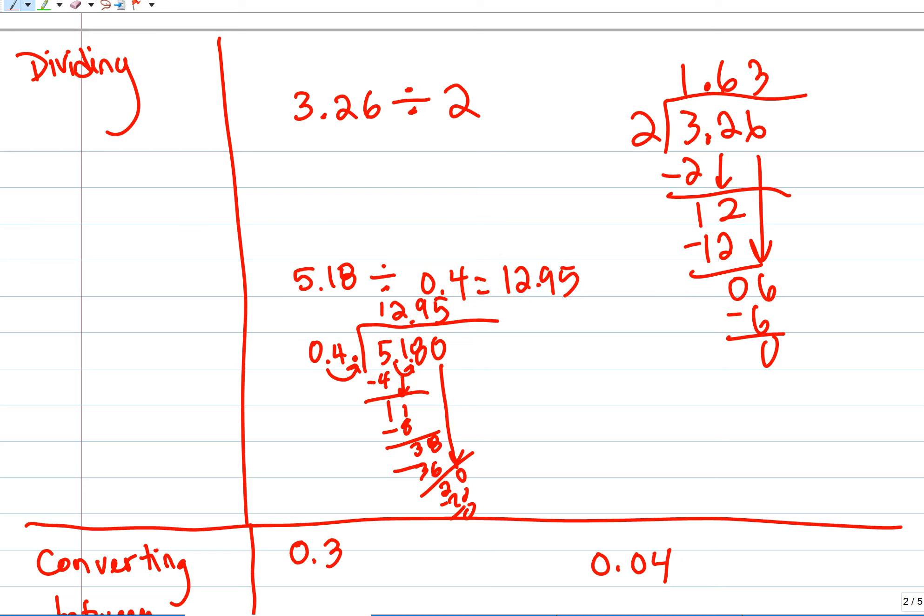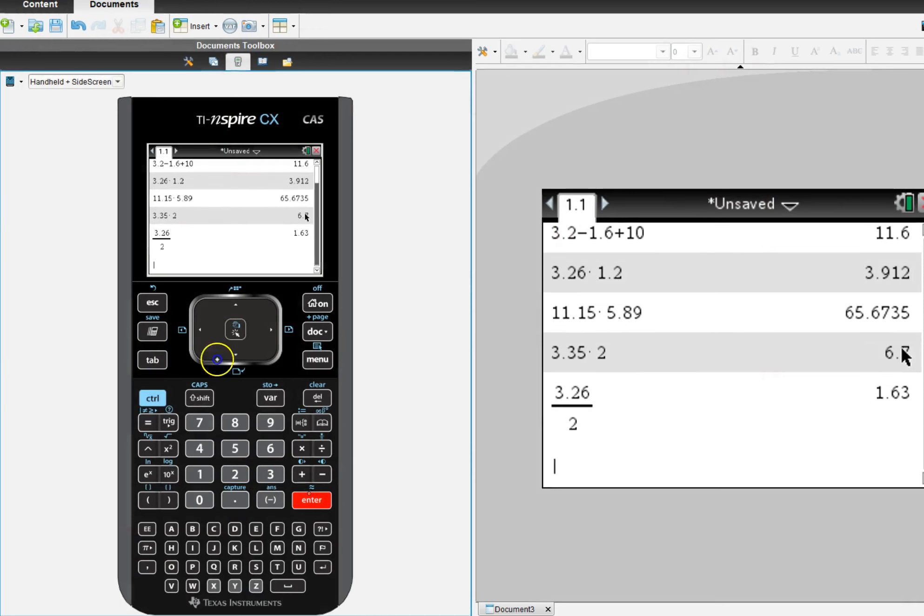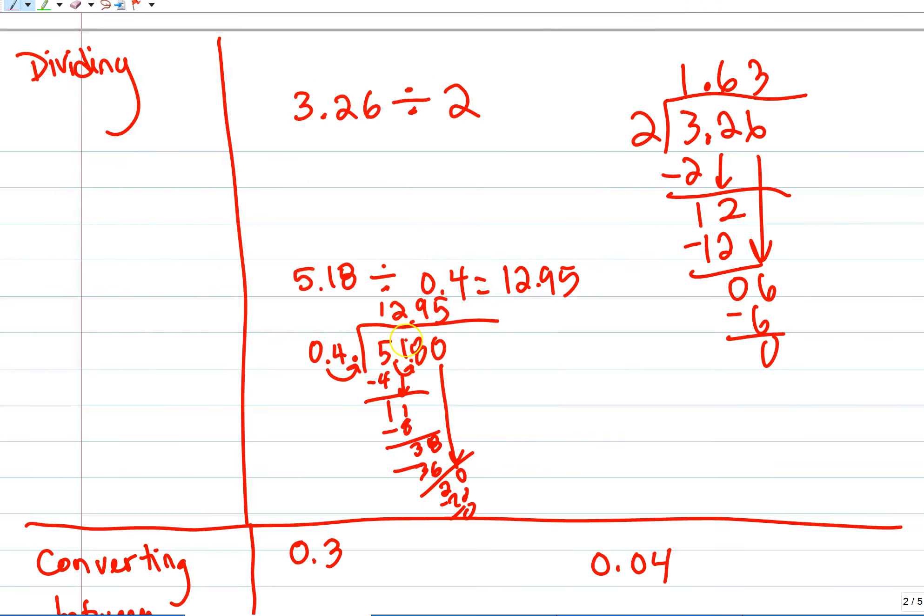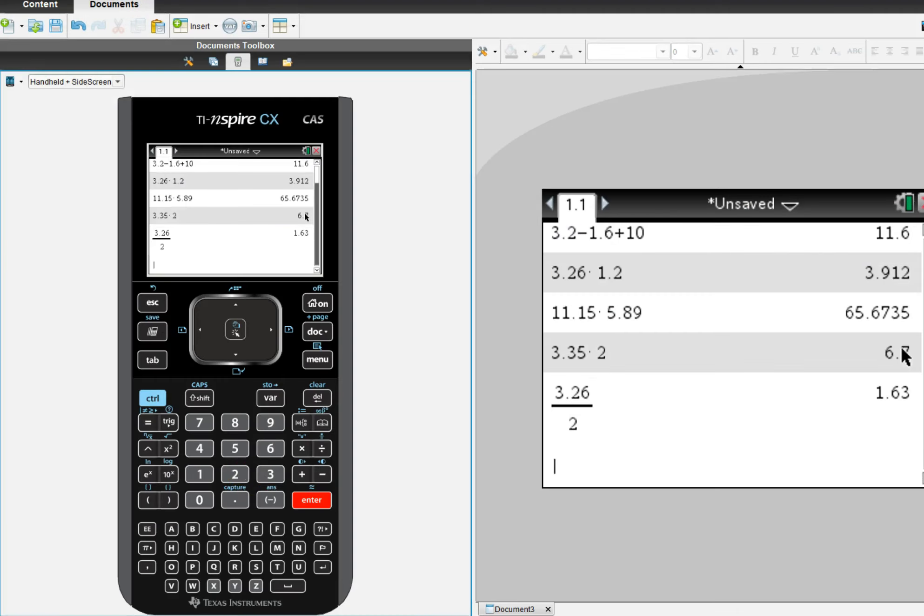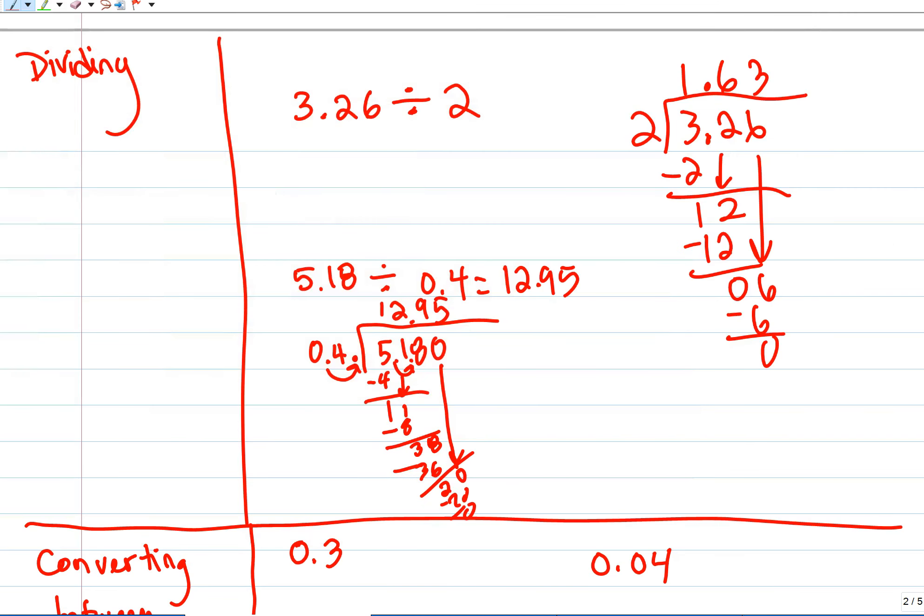But keep in mind, I'm asking you to be able to handle this understanding kind of decimal rules. But ultimately, we have 3.26 divided by 2, we have access to technology. Ultimately, when I do 5.18 divided by 0.4, we have access to technology.